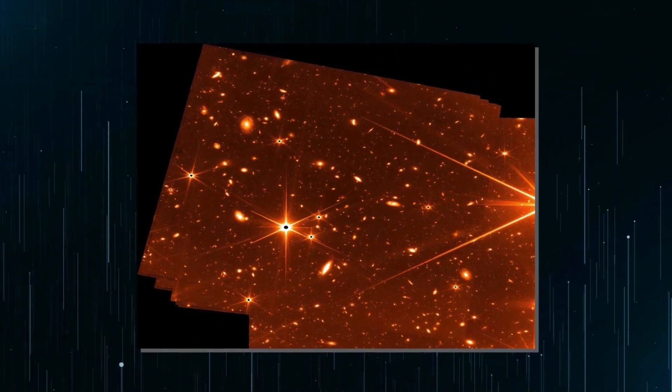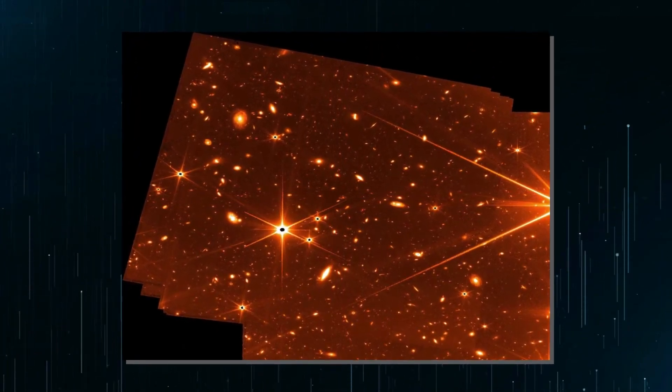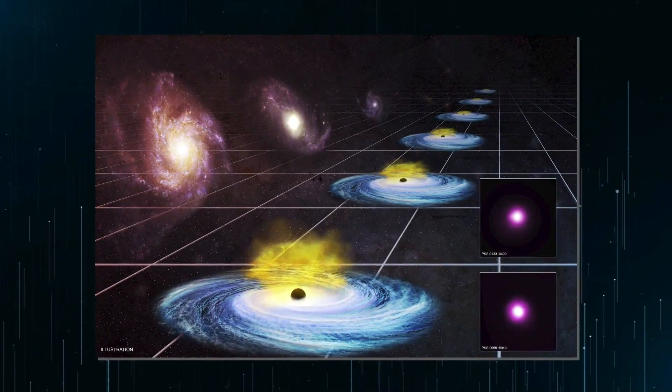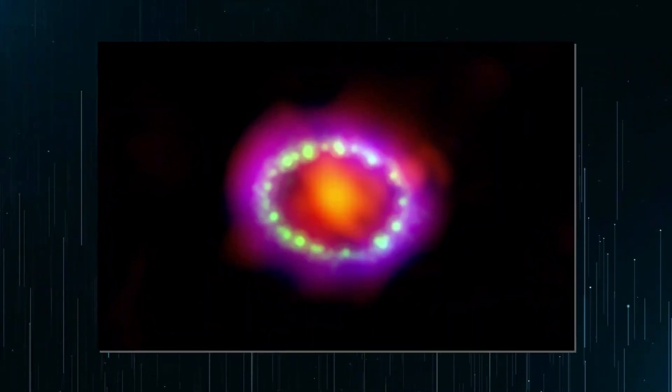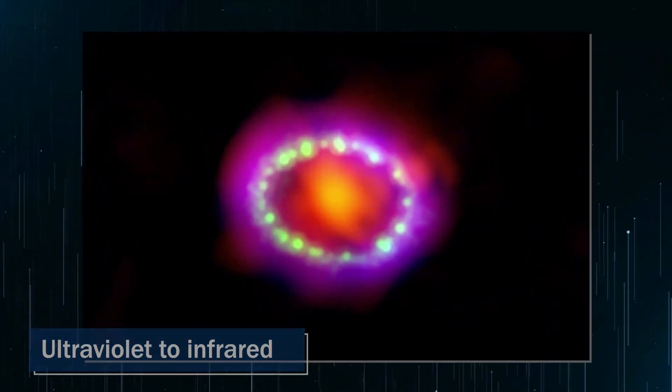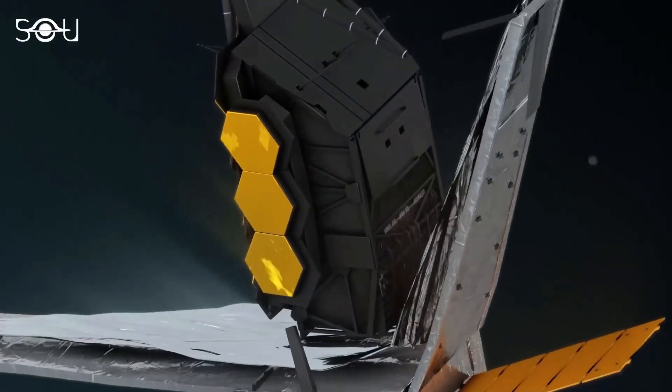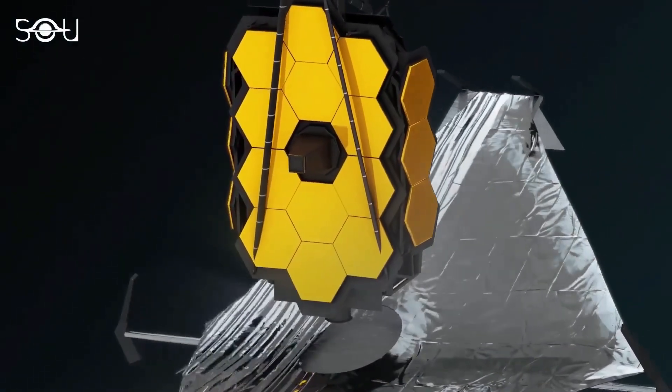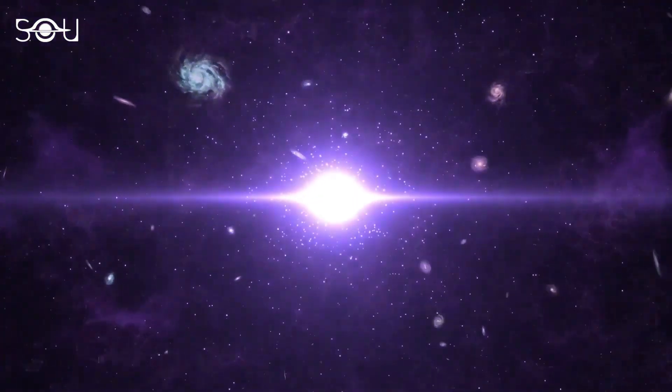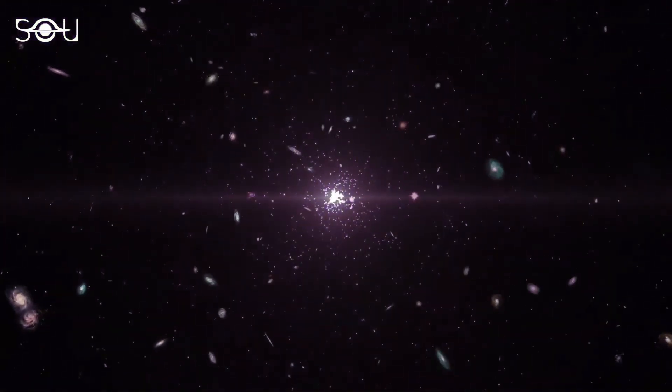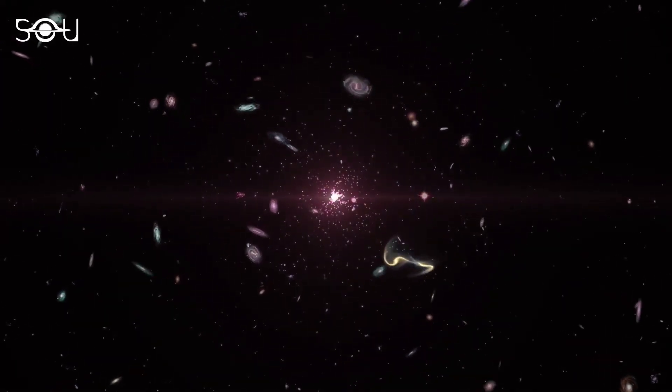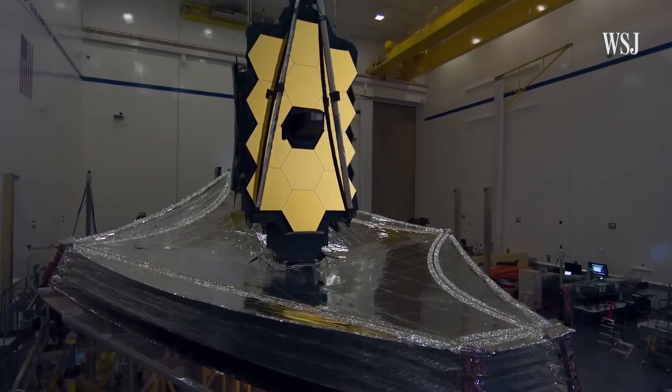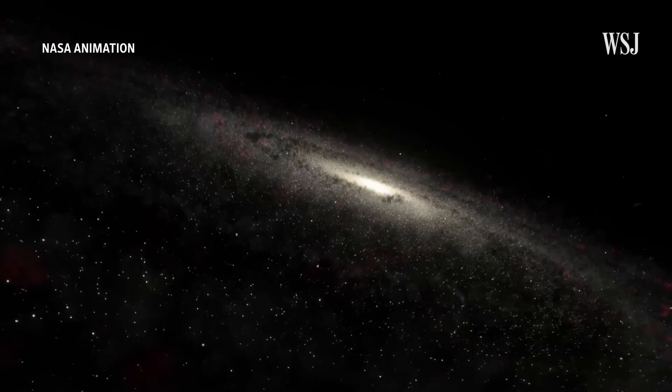Webb's infrared capabilities make it perfectly suited for observing distant galaxies. Due to the expansion of the universe, light from these galaxies is stretched out over time, shifting its wavelength from visible or ultraviolet to infrared. With its large and cold design, Webb excels at detecting infrared signals, allowing it to see much deeper into space than other telescopes. This gives it a unique ability to observe galaxies as they are growing and developing, capturing snapshots of their evolution over time. Thanks to Webb, we can gain new insights into the formation and growth of galaxies, furthering our understanding of the universe as a whole.